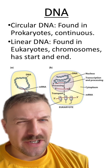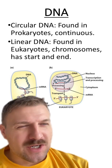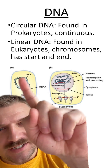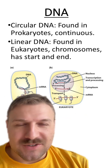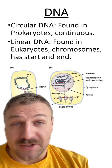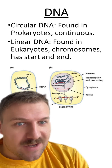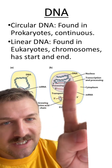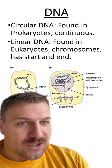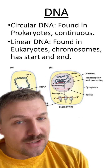Let's go over the difference between circular and linear DNA. Circular DNA is kind of what it sounds like — it's DNA that's going to be continuous or in a circle. Typically, circular DNA is found in prokaryotes or bacteria. Linear DNA is also kind of what it sounds like — it's just one long strand of DNA. I like to say it has a start and an end point, and we usually find linear DNA in eukaryotes.